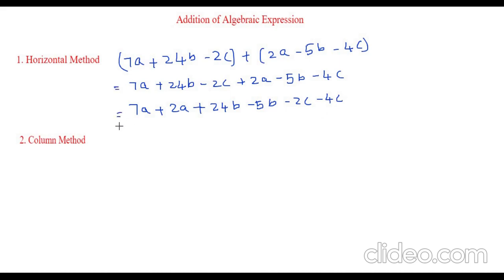Now let's add up the like terms. 7a plus 2a which is 9a. Then 24b minus 5b which is 19b. I have put the plus sign because 24 is a greater number. I have taught the addition of integers and subtraction of integers in my previous video. You can refer that.